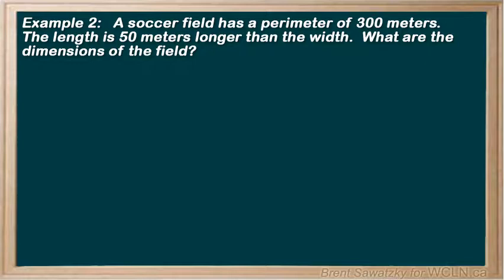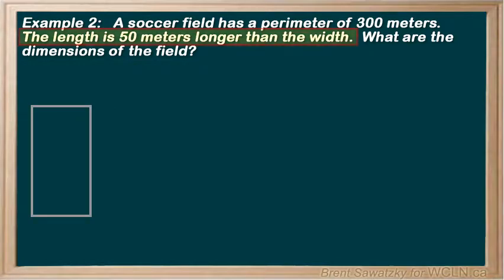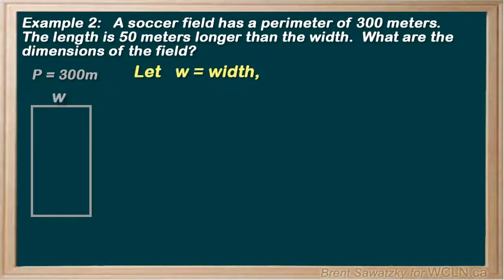So for step 1, we read it carefully and make some notes. In this case, a quick sketch would be a good form of notes. Our field and the length is longer than the width by 50 meters. And we're also told that the perimeter is 300 meters. So this will help. On to step 2, what would our variables be? If we say that w equals the width of the field, then our length would be 50 meters more than that.